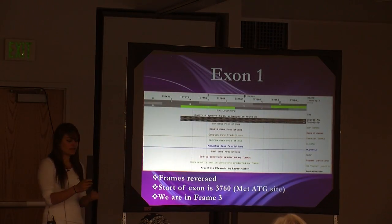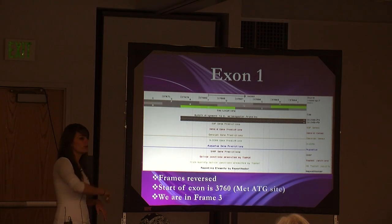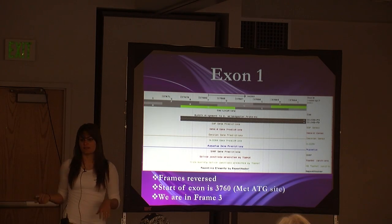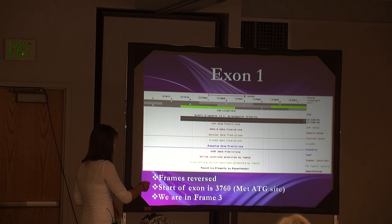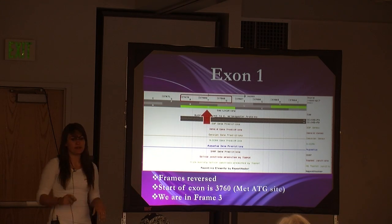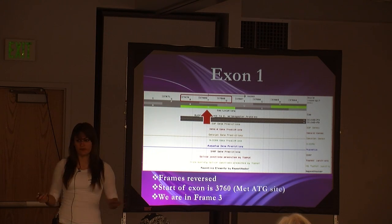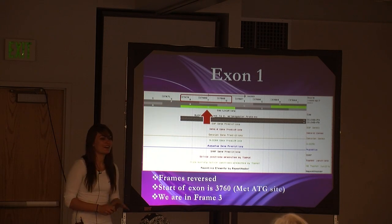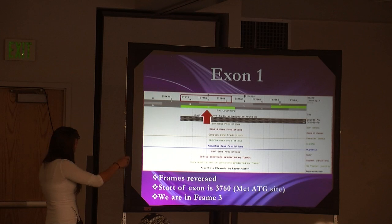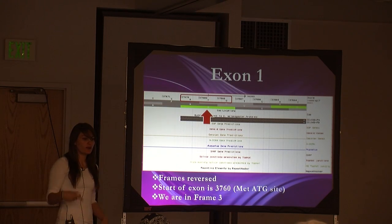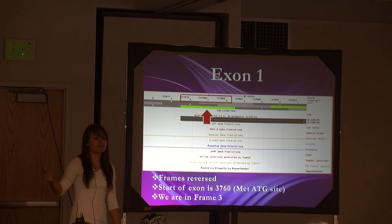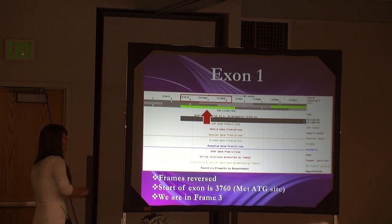Here the sequence on top is my mojavensis sequence placed into the query, and the black bar below is the melanogaster sequence. We do have our ATG site, which designates a methionine — what all proteins generally begin with — so we have our methionine start codon. I said I was in frame three, meaning these bars show us what amino acid lines up according to the nucleotide sequence, just as I described with codons earlier.